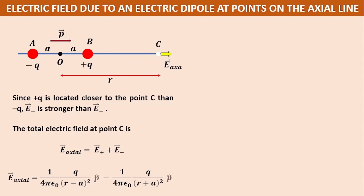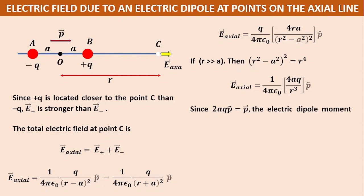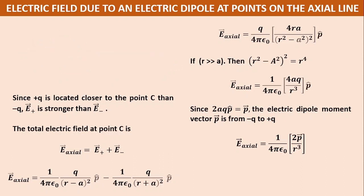Simplifying, the r square and a square terms cancel each other, and the 2ra term appears twice, giving 4ra in the numerator. If the distance r is much greater than a, we can neglect the a square value. So e axial vector equals 1 by 4 pi epsilon 0, 4aq divided by r cube, p cap. Since 2aq p cap equals p vector — the electric dipole moment vector directed from minus q to plus q — we get: e axial vector equals 1 by 4 pi epsilon 0, 2p vector divided by r cube.